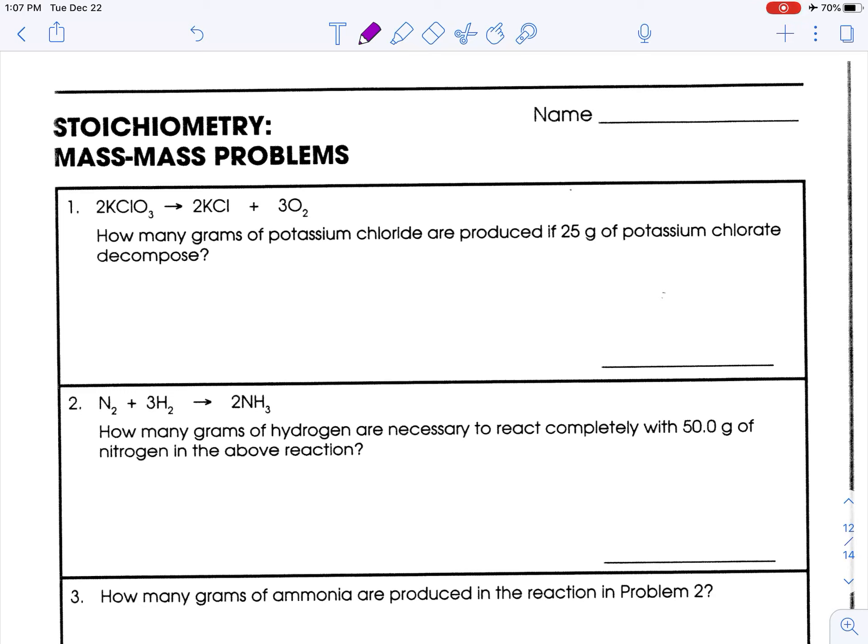So up until now, all we've had to do is multiply by the conversion factor, which is the coefficient of whatever you seek over whatever you know. But now we're going to deal with mass, and there's more to it, because remember, with Avogadro's number, you just multiply or divide by 6.02 times 10 to the 23rd, no matter what substance it was.